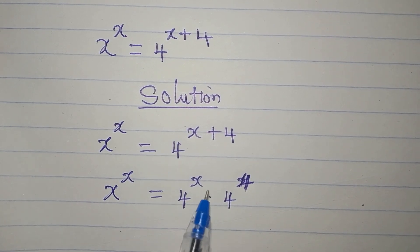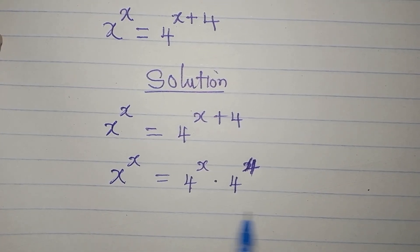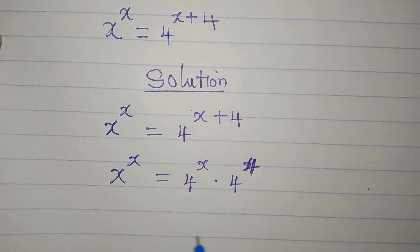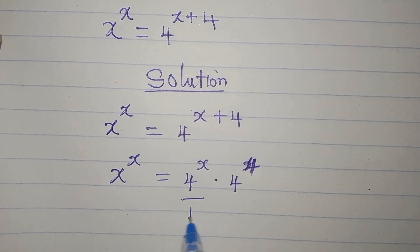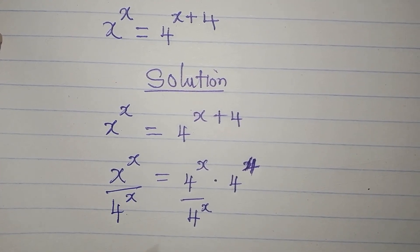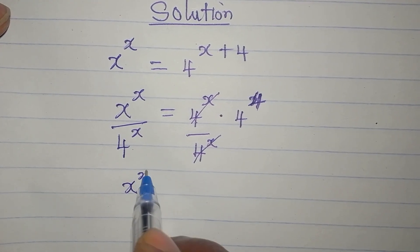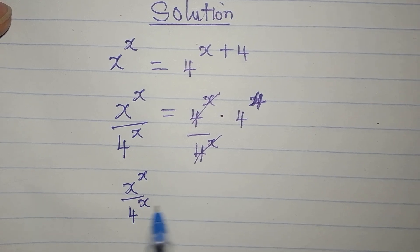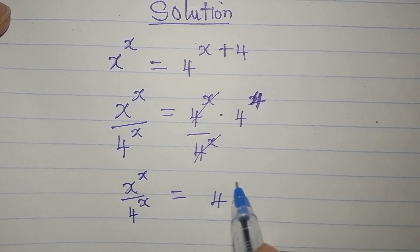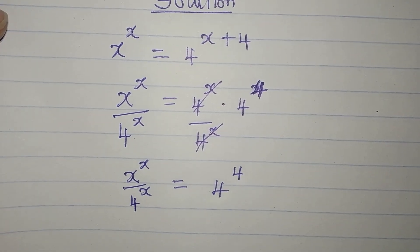We add the powers because it is multiplication. Now the next thing I will do is divide both sides by 4 to the power of x. This will cancel, and we have x to the power of x over 4 to the power of x being equal to 4 to the power of 4.